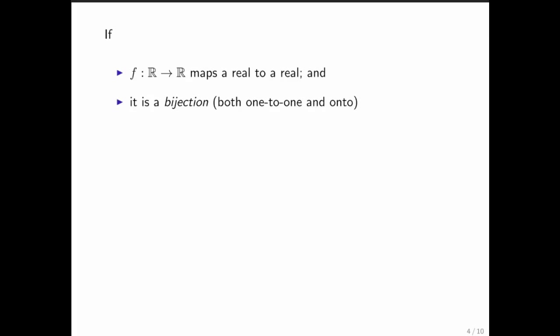Onto means that for every element in ℝ, there is an element in ℝ such that if you put it into F, you get that output.